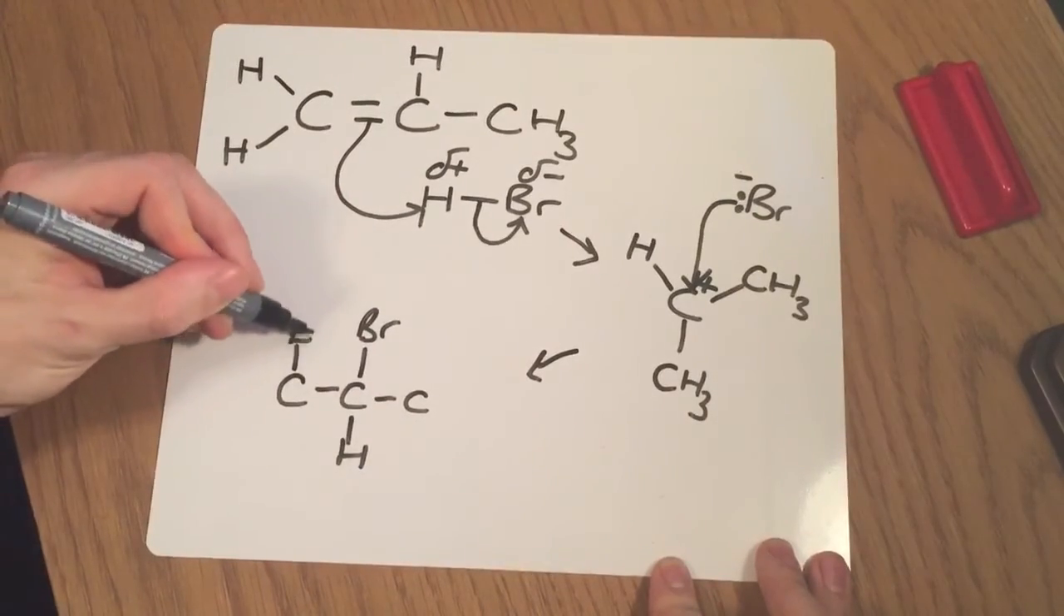And so what we make over here, if we compare this structure to what we started with, we now have a bromine in the middle of the chain, we've completely lost the double bond, we've now got a fully saturated molecule, and we've actually got a secondary bromoalkane. So it's a secondary halogenoalkane.